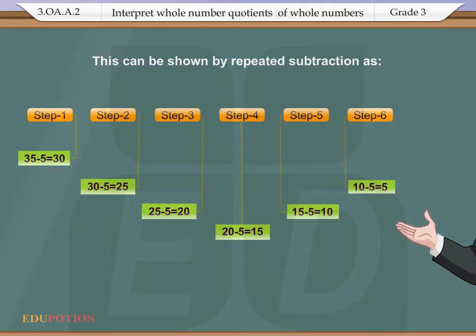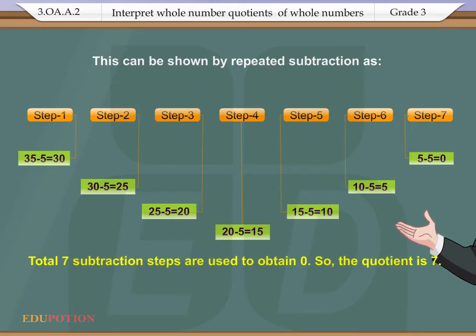10 - 5 = 5, which is step 6. 5 - 5 = 0 is step 7. A total of 7 subtraction steps are used to obtain 0, so the quotient is 7.